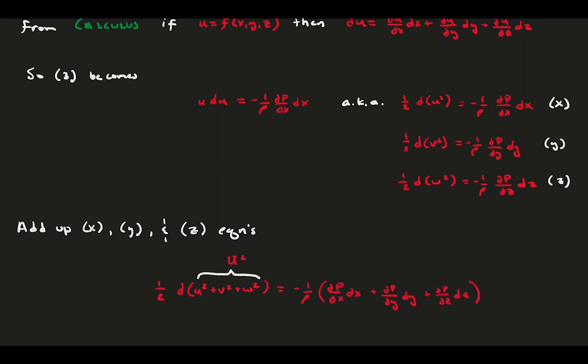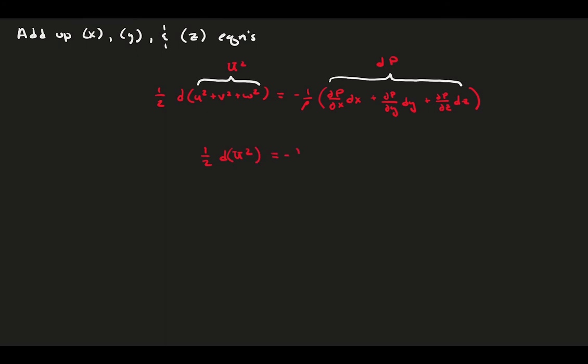Notice that the sum of the components of velocity squared is the total velocity squared, and on the right we have a pressure differential by definition. Things can be simplified.